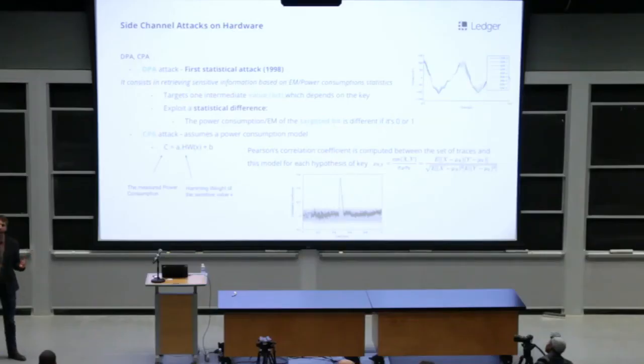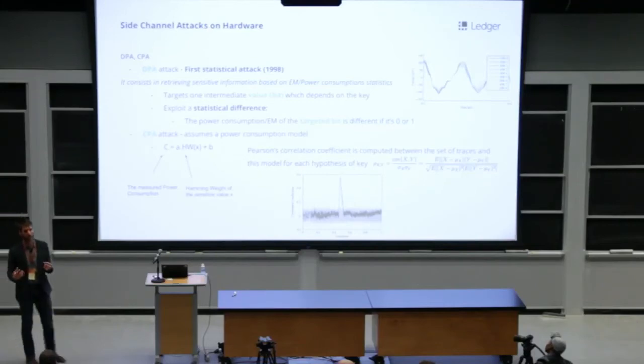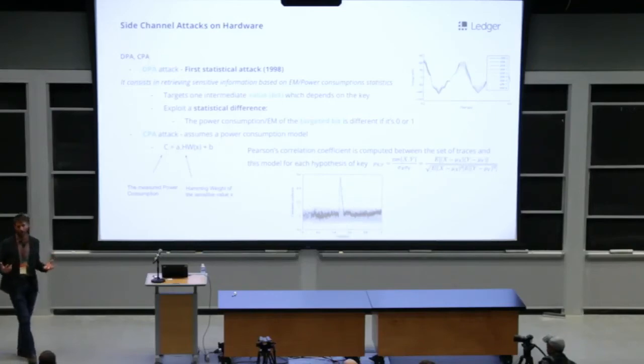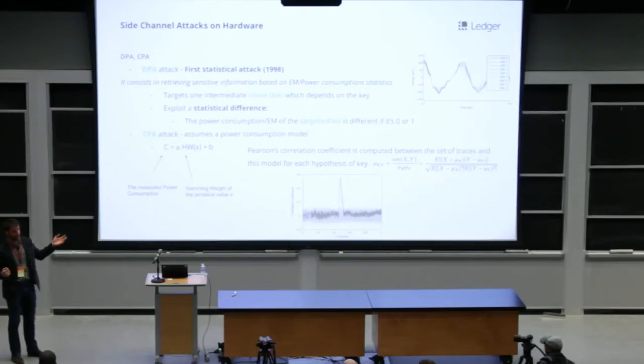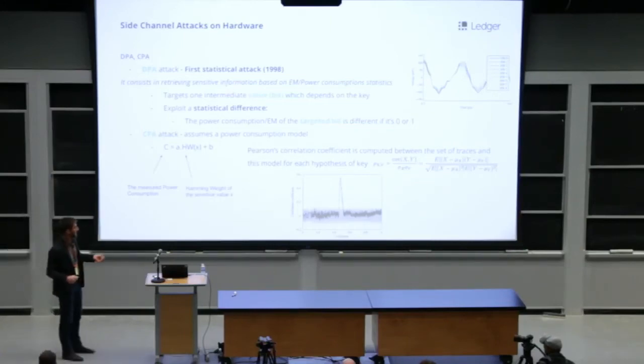The CPA attack generalizes this idea, but instead of only targeting one bit, it assumes a power consumption model for one byte or for larger values. The attacker collects a large number of traces, and then computes the Pearson correlation coefficient in order to know which hypothesis of key gives the larger correlation. And we will get this kind of trace for the correct hypothesis of key.